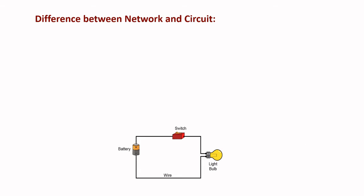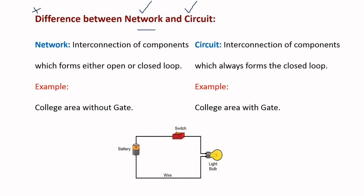Next is the difference between network and circuit, which is also very important. A network is the interconnection of components which forms either an open or a closed loop. A circuit is also an interconnection of components, but it always forms a closed loop.